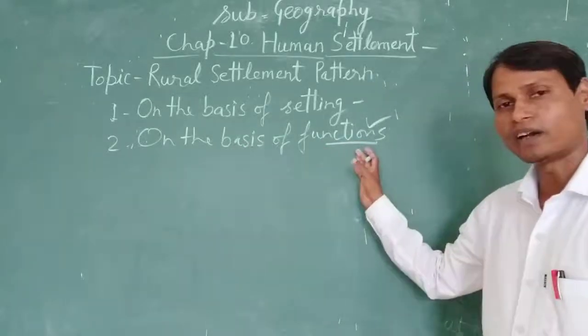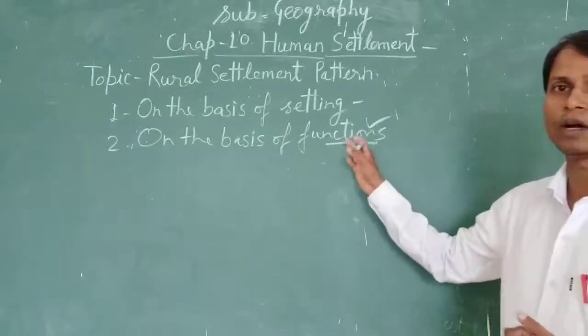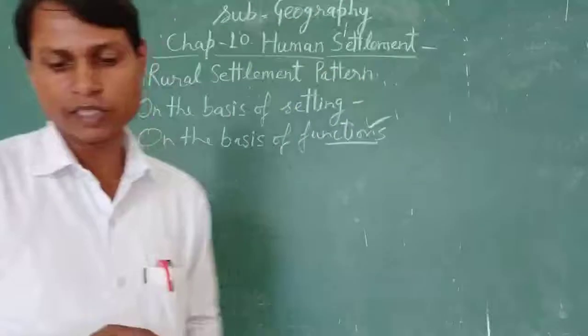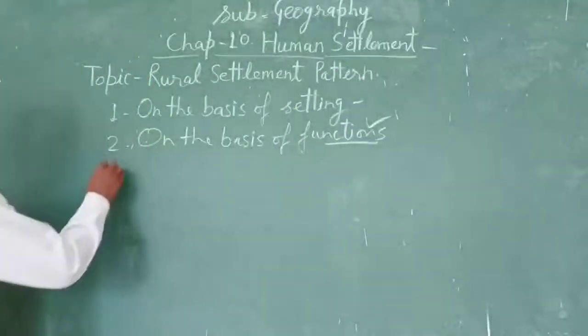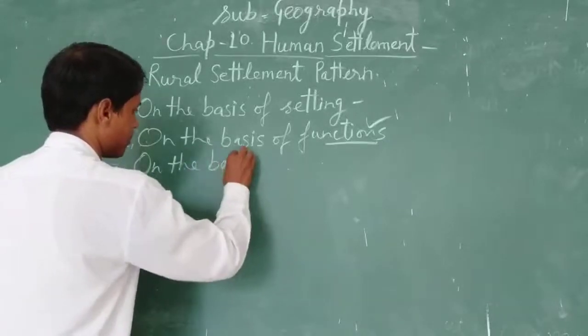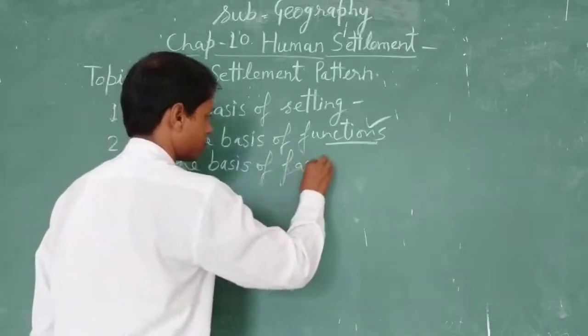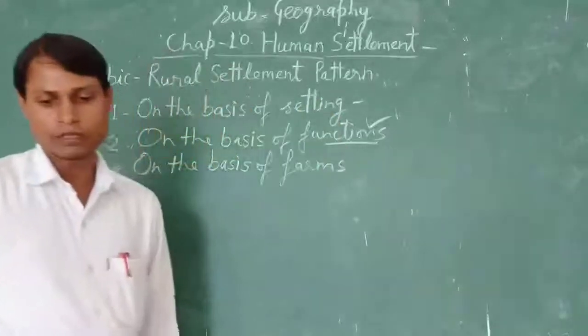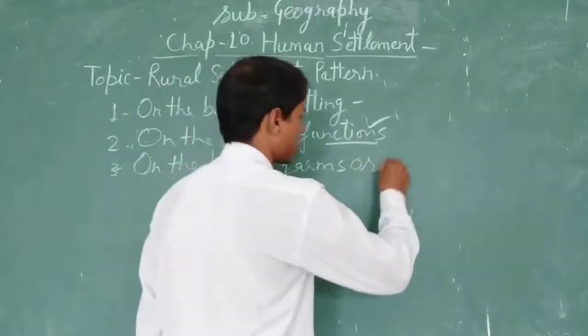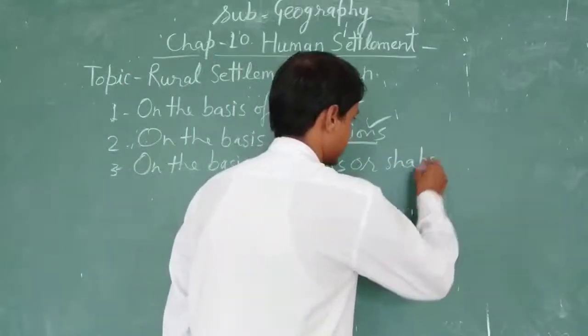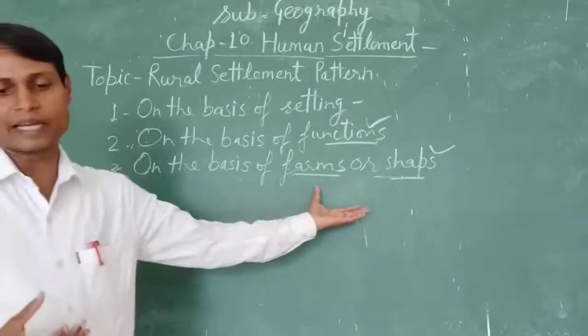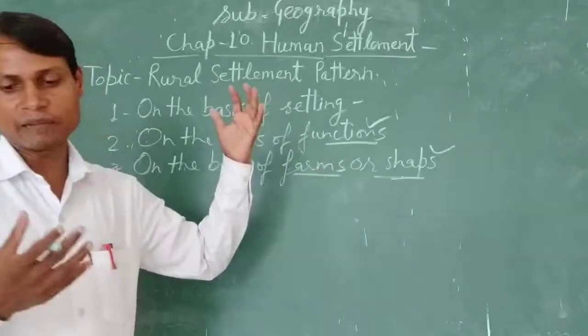What are the function of one? What are the function of society? Next, third, on the basis of forms. Which kind of forms? It means, shape of the settlement. Form or shape. According to which they can make their house.